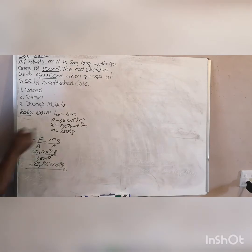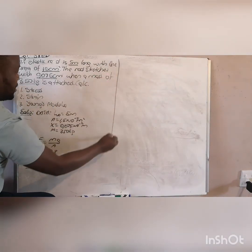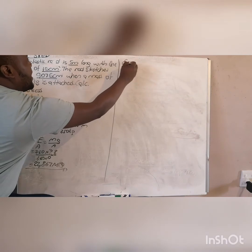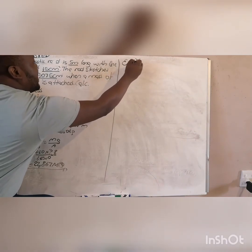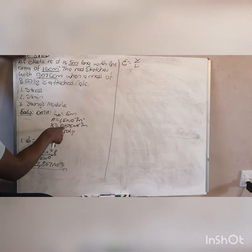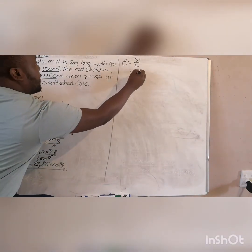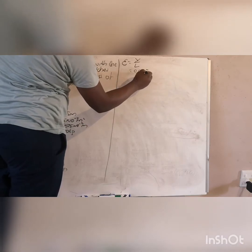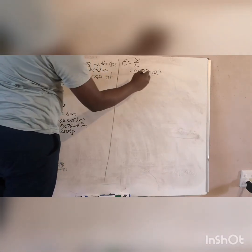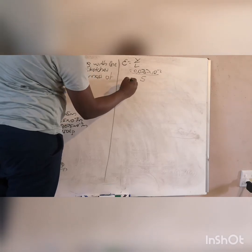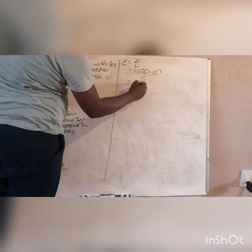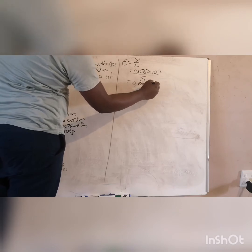Secondly, they want you to calculate your strain. Write your formula for strain: your strain is changing length over original length. Your change in length is 0.075 times 10 exponent negative 2 divided by your original length which is 5, and then your strain is 0.0015.